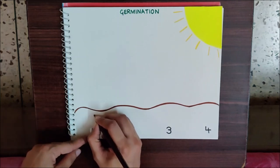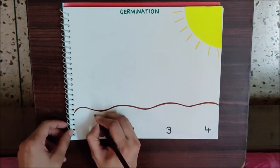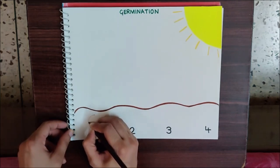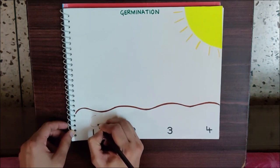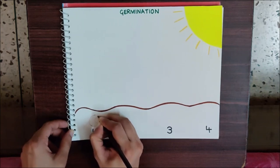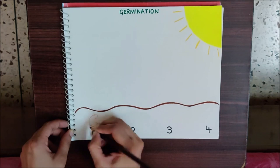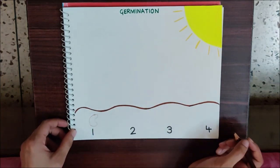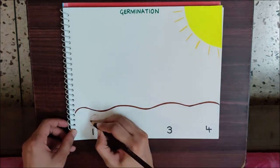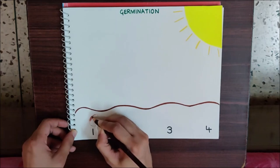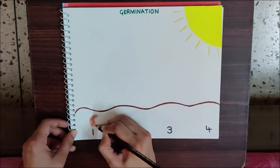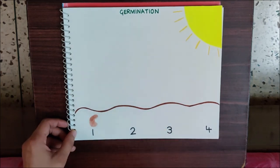So just above number 1, I am making a seed with brown color pencil. Can you see the seed? Yes, you can fill color inside the seed. This is my seed.